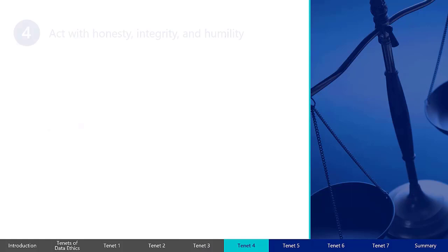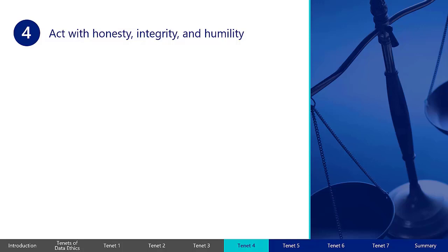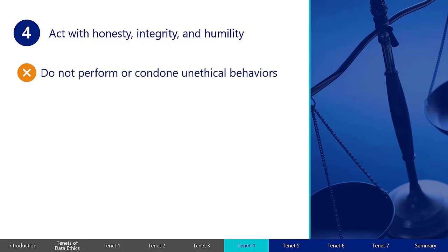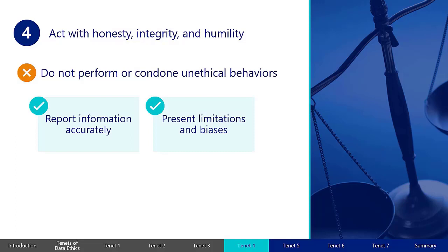The fourth tenet of data ethics is to act with honesty, integrity, and humility. All data users are expected to exhibit honesty and integrity in their work with data, regardless of job title, role, or data responsibilities. Employees should not perform or condone unethical data behaviors. When sharing data and findings, employees should report information accurately and present any data limitations and known biases. All sources and methods used to obtain and analyze data, including any pre-processing, should be fully disclosed, and detailed explanations should be provided for any exclusions.